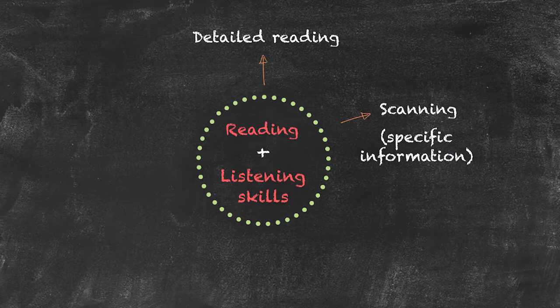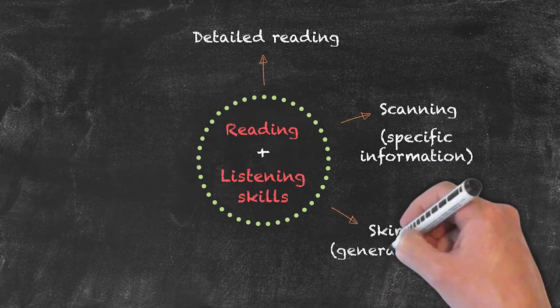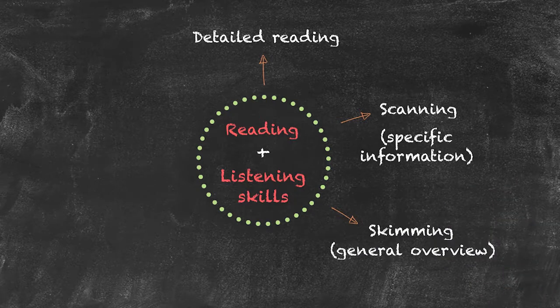The other type of quick reading that we do is something called skimming. What we are doing in skimming is we are trying to get a general overview of what the text is actually saying.